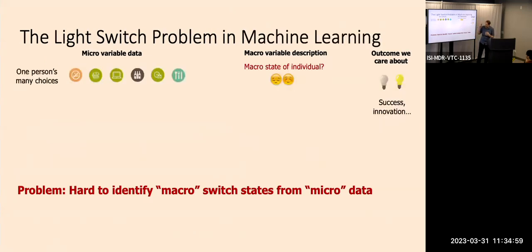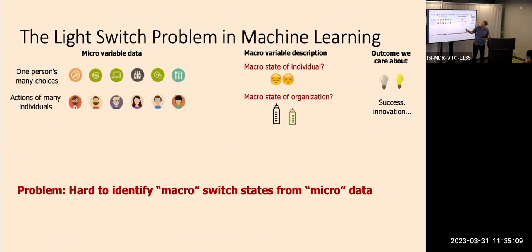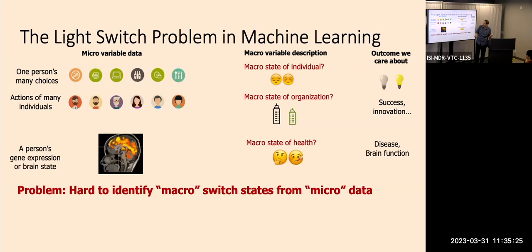Although we use images because they're easy to work with and interpret, we really care about other domains even more. In social data about people's individual actions, we don't really care about every single action — we want something about a person's macro state. For groups of individuals, we might care about the macro state of an organization. In health, you can take things like gene expression or MRI data — super high dimensional — but we feel there should be higher-level macro states we're really interested in. That's the motivation for what I'm trying to do with the information decomposition point of view.